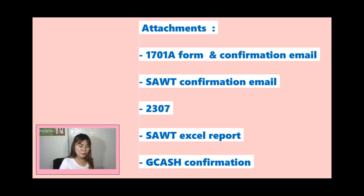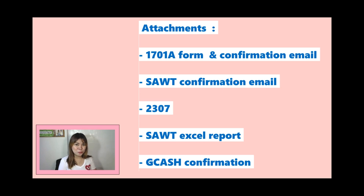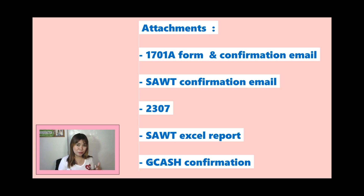If you have attachments like the 2307, you can have them received by the BIR for stamping — but it depends on your RDO. Some RDOs accept the email confirmation as a virtual stamp and no longer require physical stamping, while others still do — so check with your RDO. So there you have it guys, I hope this video helped you. If you have any questions, please use the comment section so others can benefit too, instead of messaging me on Facebook — if we have a thread here it will save us all time. Thank you for watching and until my next video!